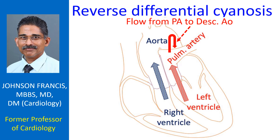In a neonate, differential cyanosis can occur due to persistent pulmonary hypertension, aortic arch hypoplasia, interrupted aortic arch, critical coarctation, and critical aortic stenosis with patent ductus arteriosus.